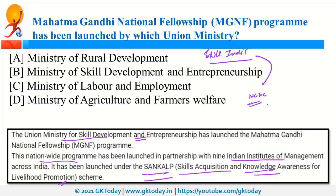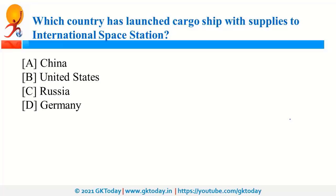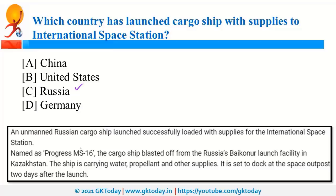Russia has launched a cargo ship, Progress MS-16, with supplies for the ISS — International Space Station. The ISS is a habitable artificial satellite in Low Earth Orbit and is a collaboration of multiple space agencies.